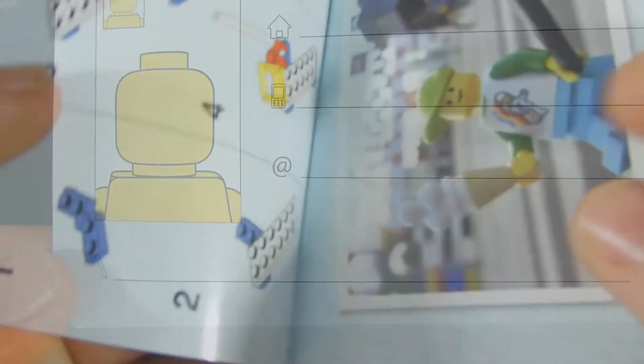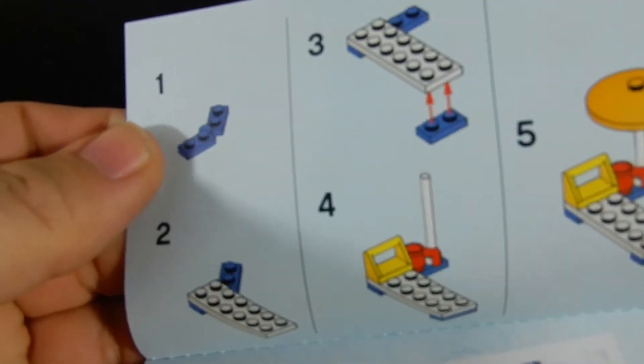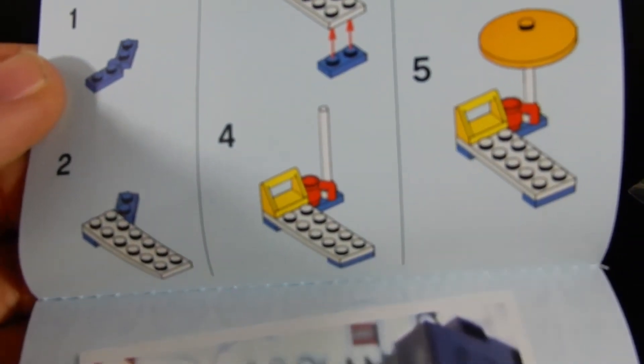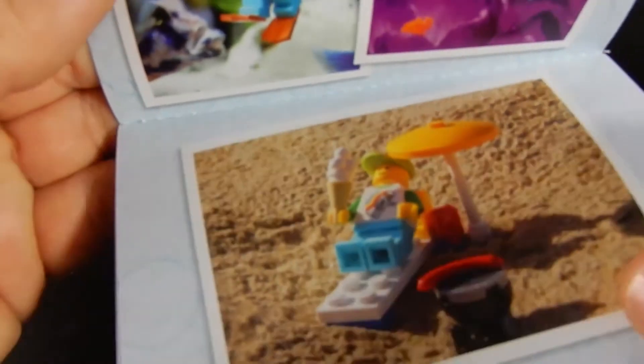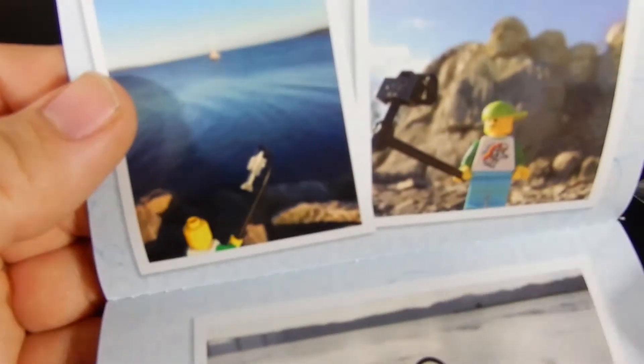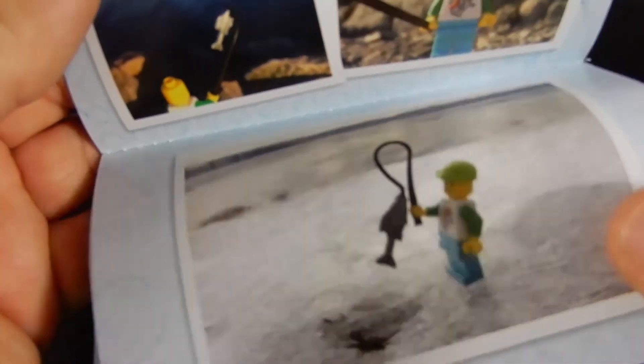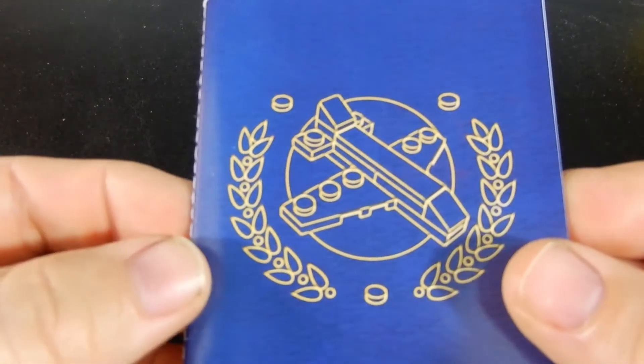And then you can sign your name down there at the bottom. Then inside it has directions for some of the little builds that come here, along with some photos of the different adventures that our traveling character has gone on. It's kind of fun.